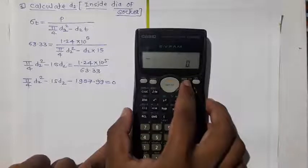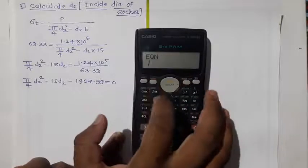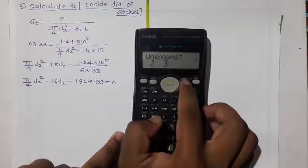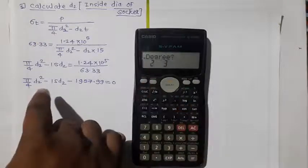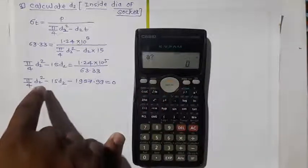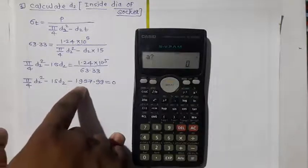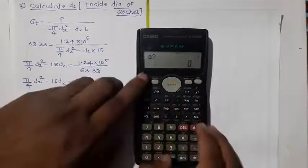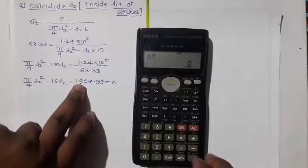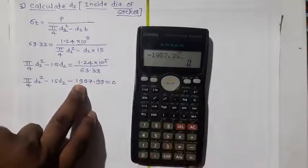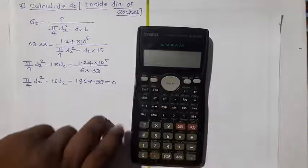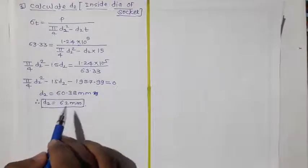To solve this quadratic equation, we use a calculator. Press the mode button three times to get the equation option, then press button 1, and select degree 2. Enter A = π/4 (coefficient of D2²), B = −15 (coefficient of D2), and C = −1957.99 (constant). Pressing equals gives D2 = 60.38mm. Rounding this up, the final value of D2 is 62mm.